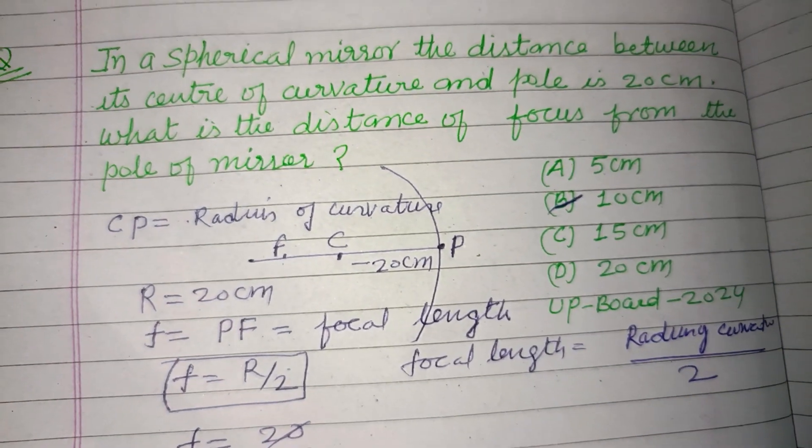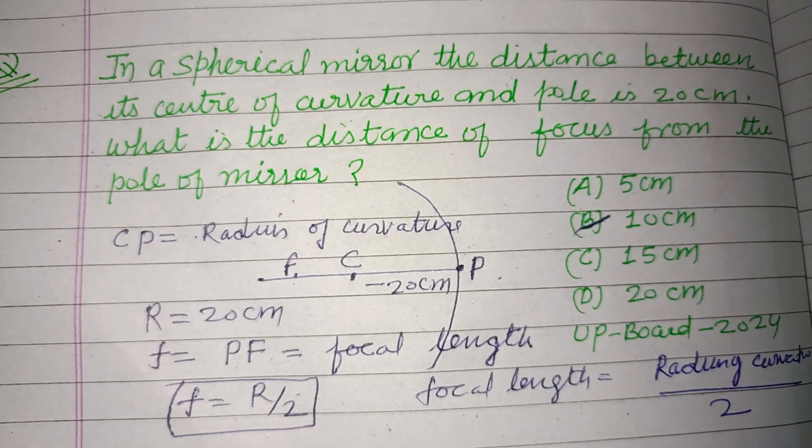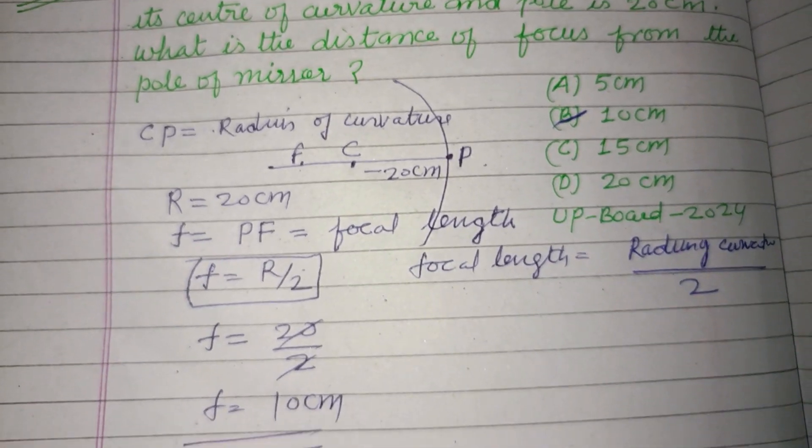So focal length is 10 centimeters, which is given in option B. Therefore option B is correct. I hope you got it, please like the video, subscribe the channel, thanks for watching.